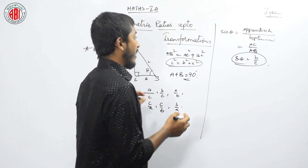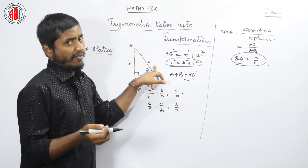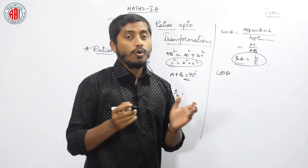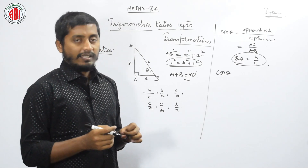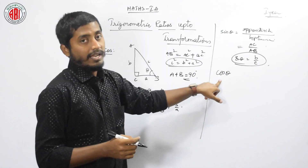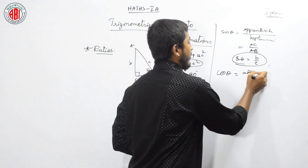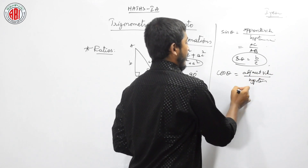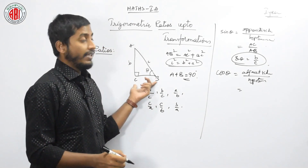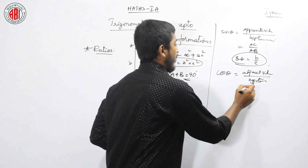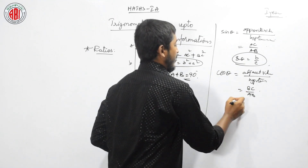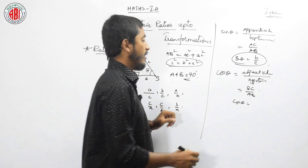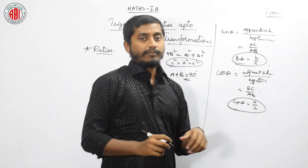Similarly, the second ratio: we have seen opposite by hypotenuse. There should be one more — that is adjacent by hypotenuse — which is nothing but cosine of theta. Cosine θ is adjacent side of that angle by hypotenuse, that is BC/AB, which simplifies to a/c. These are the two basic ratios of trigonometry.